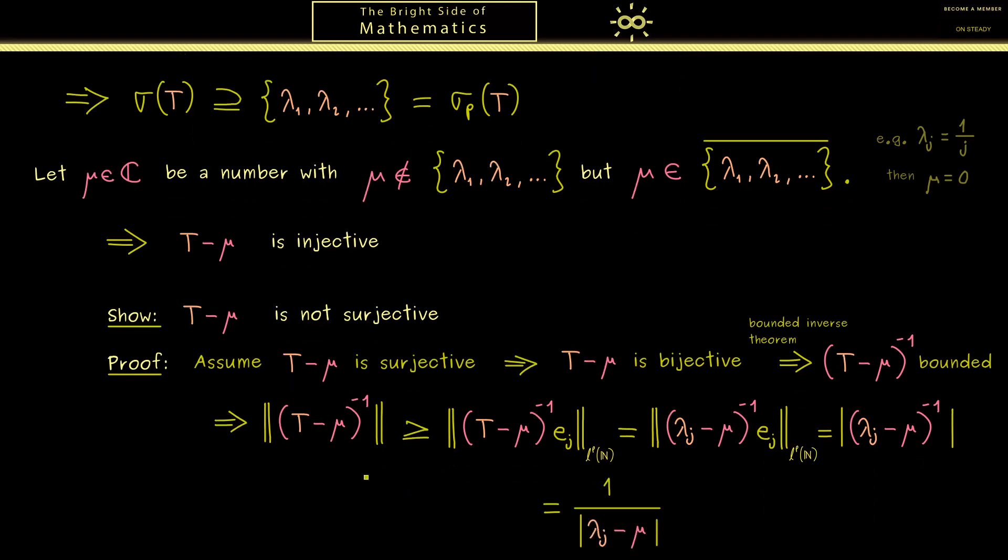This estimate we have shown holds for all natural numbers j. And that's a problem because we know with the lambdas we can get as close as we want to mu. In other words the reciprocal here will explode.